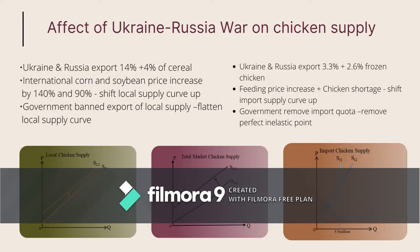Ukraine and Russia export 16% of world cereal. The war between them caused two major chicken feeds to increase by 140% and 90%. This shifted the local chicken supply curve upward from SL1 to SL2 as production costs increased. The government banned exports to supply the local market, but this only slightly flattened the local supply line.